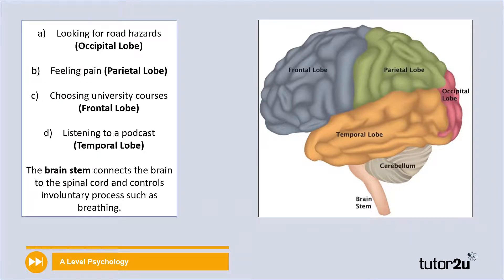Hopefully you did okay — here are some answers to compare yours to. Looking for road hazards, we'd use the occipital lobe, because that's the part of the brain processing visual information. The parietal lobe is our somatosensory area, picking up on sensory information from the environment, so that's what processes pain. We would use our frontal lobe for choosing university courses, as it's more associated with decision making. We would use the temporal lobe for listening to a podcast — this is the part of the brain that helps us understand what we hear. The brainstem connects the brain to the spinal cord and controls involuntary processes like breathing and blinking.